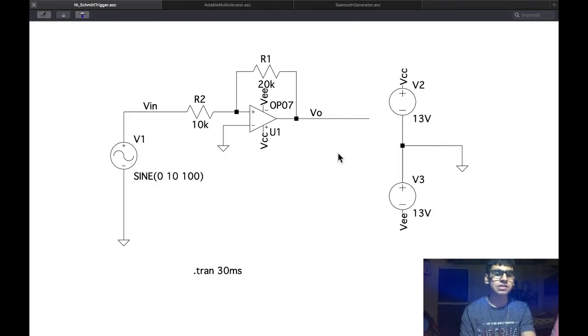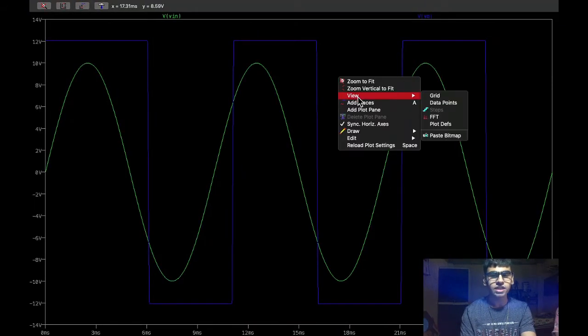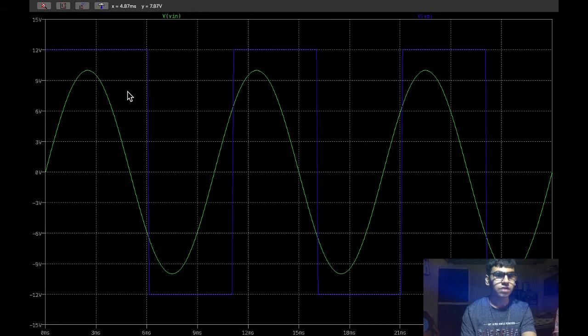Next we have this non-inverting Schmidt trigger configuration. We can see that the input signal is connected to the non-inverting terminal of the op-amp. Here too we can verify the output, probe the input and the output signal and we get this output. Here we can see that the voltage level goes from high to low at VLTP point and from low to high at the VUTP point. This is inverse of what happened in the inverting configuration of Schmidt trigger.